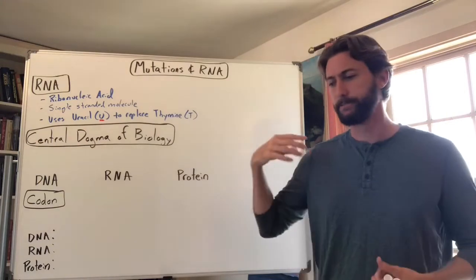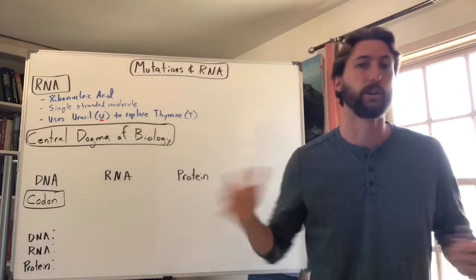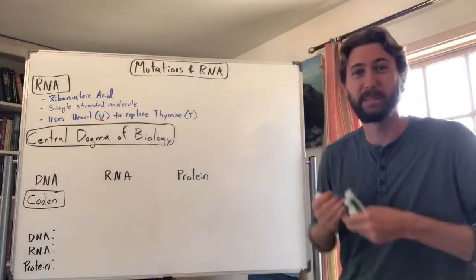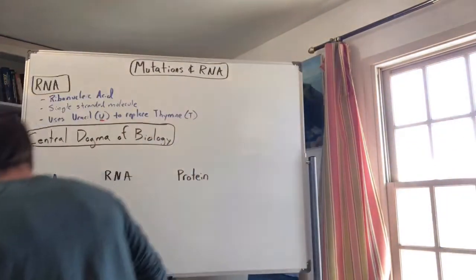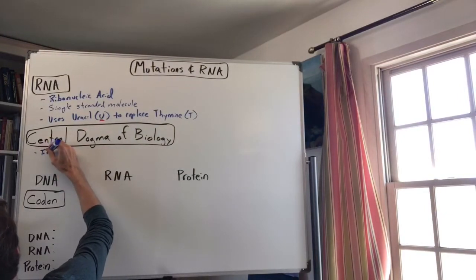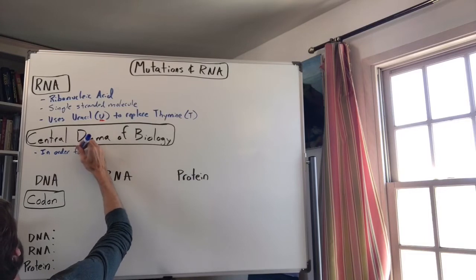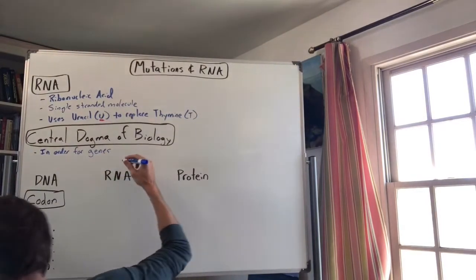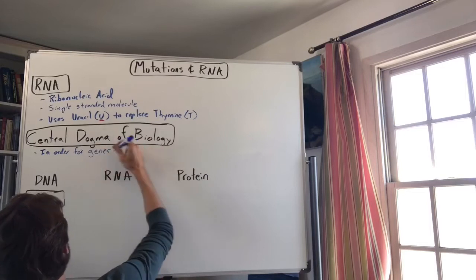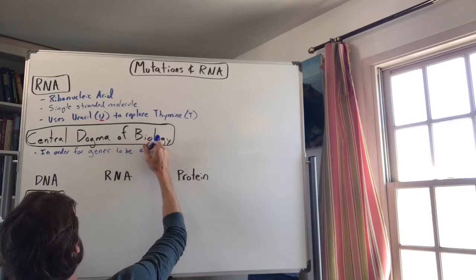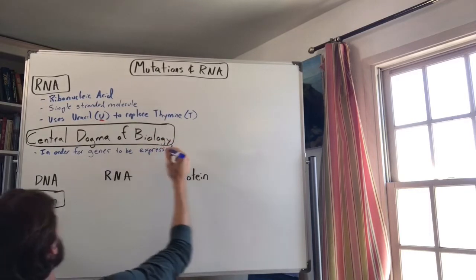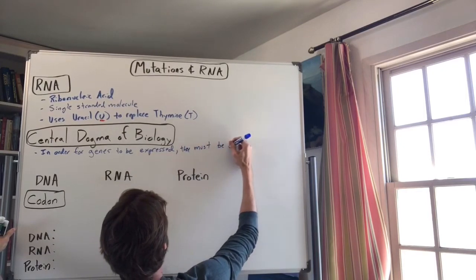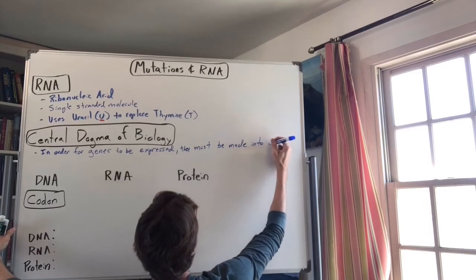Proteins are super important because they go around doing the job of actually expressing the genes — doing different jobs in the body. So DNA must be turned into proteins to show your phenotype, your traits: your hair color, eye color, dimples, hairline, and in order for genes to be expressed, they must be made into proteins.